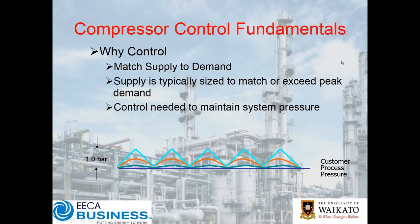When it comes to controlling the compressors, you need to match supply to demand — and supply is typically sized to match or exceed the peak demand. If that peak is quite a bit higher than where you are most of the time, you can run into troubles in terms of how the compressor may be cycling on and off.